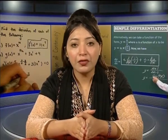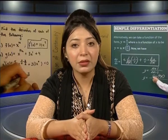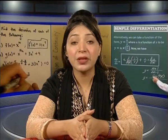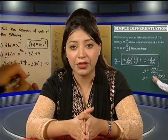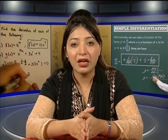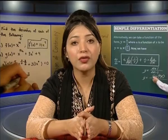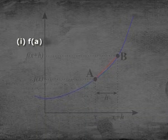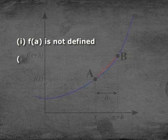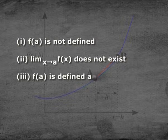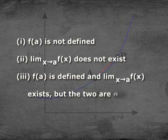The graph of functions which are continuous at all real numbers can be drawn without lifting the pencil. A function is said to be discontinuous if it is not a continuous function. A function f(x) is discontinuous at x = a in any one of the following cases: first, f(a) is not defined; second, limit x→a of f(x) does not exist; third, f(a) is defined and the limit exists but the two are not equal.